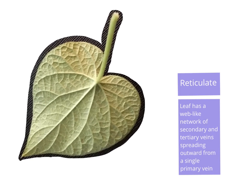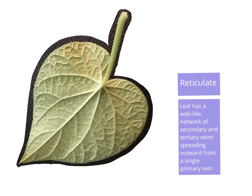Reticulate leaves have that web-like network of secondary and tertiary veins that spread outward from a single primary vein, or there could be more than one primary vein. If you look at this one, you can see the petiole attaching right here, and you can see that there are several strong, larger veins attached at that point. That actually makes this leaf a palmate leaf, which is defined as a reticulate leaf with more than one primary vein. From these primary veins, you should see the fine network of secondary and tertiary veins all connecting with each other and running out towards the edge of the leaf, getting smaller and smaller.